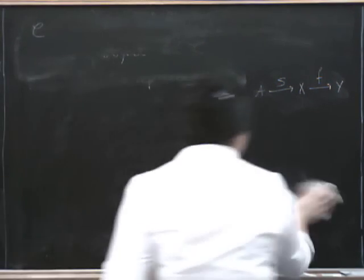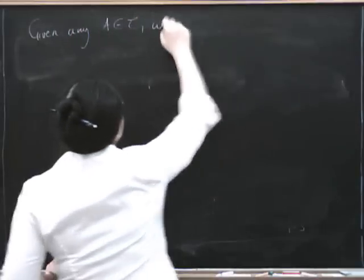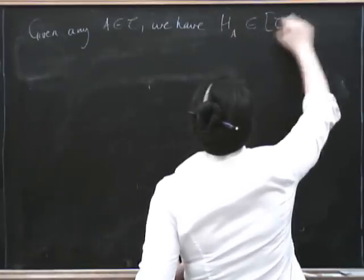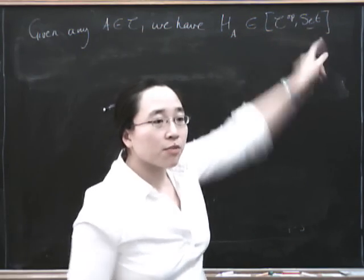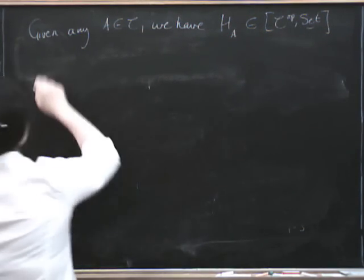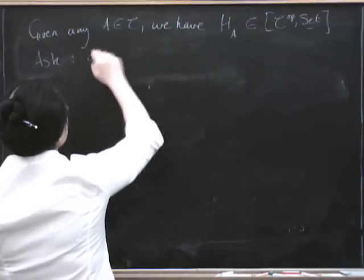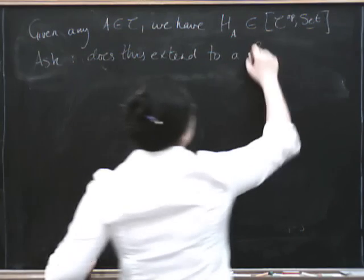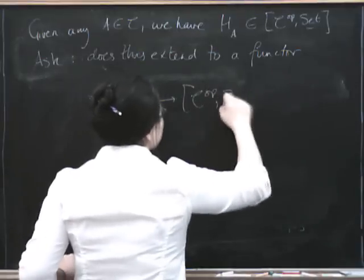So let's just recap what I just said. Given any A in C, we have a functor H sub A, which is in the functor category. So it's a pre-sheaf on C. It's in the functor category, functors from C op to Set. And so we can ask ourselves, does this extend to a functor?